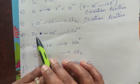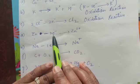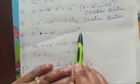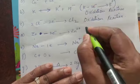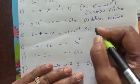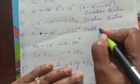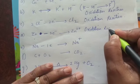Next example is zinc atom loses 2 electrons and gets converted to Zn²⁺ ion. So here also there is loss of electron. So this will be also called as oxidation reaction.